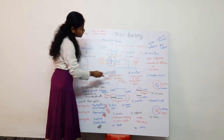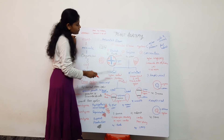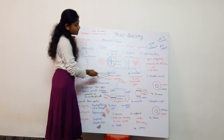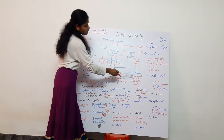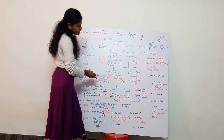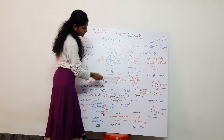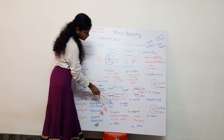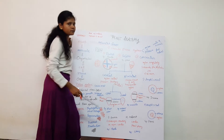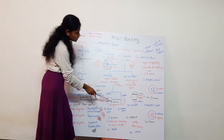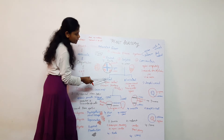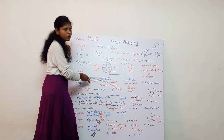Conjoint vascular bundles are of two types: collateral conjoint vascular bundle and bicollateral vascular bundle. In collateral, xylem is present in the center and phloem is on the outer side. This is called the collateral vascular bundle.